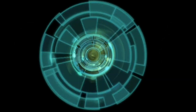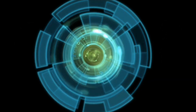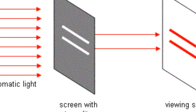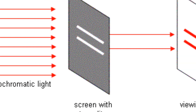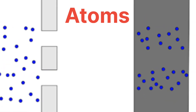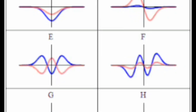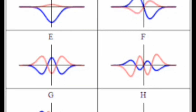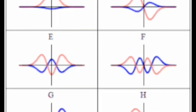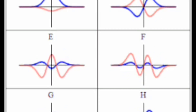To grasp this extraordinary concept, let's first revisit the renowned double-slit experiment. When a stream of particles, such as photons, electrons, or even atoms, is fired through two slits and directed at a screen, we observe an interference pattern. Astonishingly, each particle behaves like a wave, creating an overlapping pattern of light and dark bands.